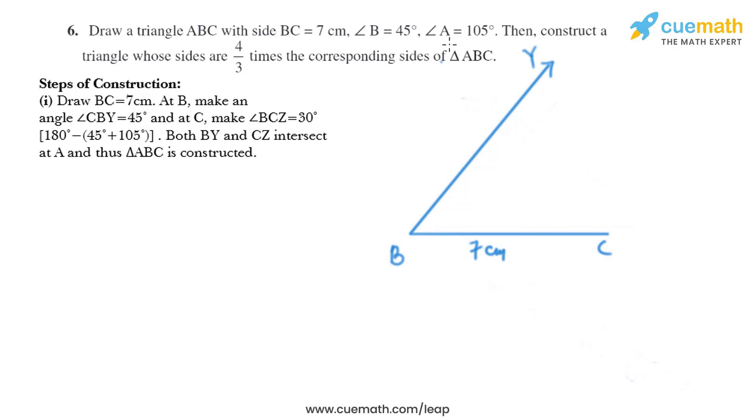Now we have to make angle BCZ. Using a protractor we can draw 30 degrees, so like that BCZ is 30 degrees. And the point of intersection we will name it as A. So we have got triangle ABC.